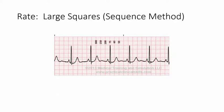Now, also with the large squares, this is called the sequence method because there's a sequence involved. Now I don't particularly care for this because with this you have to memorize these numbers, but if that works for you this is a very good way of doing this. Again, you don't need a six-second strip in this one. Okay, so remember that 300 divided by the number of large squares between the Rs is going to give you the heart rate in beats per minute.